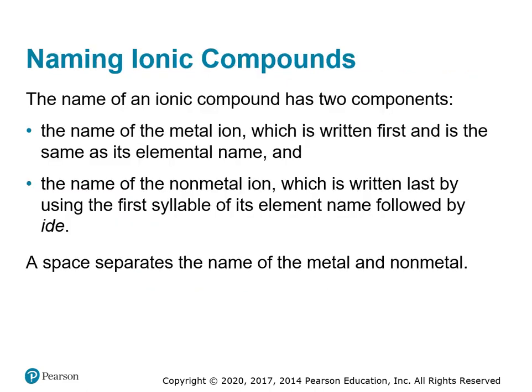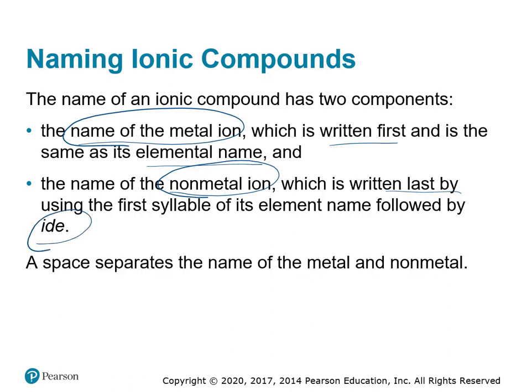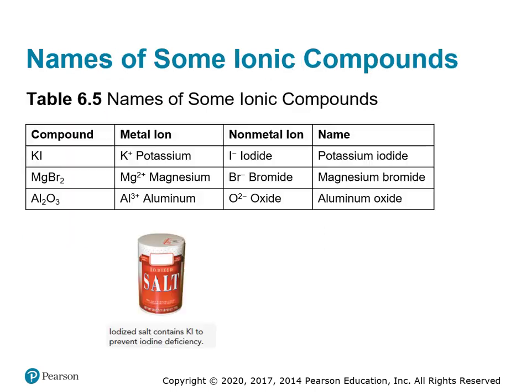The name of an ionic compound has two components: the name of the metal ion, which is written first, and it's the same as the elemental name. And the name of the non-metal ion, which is written last, using the first syllable of the element's name followed by '-ide.' There's a space in between the metal and the non-metal's name.